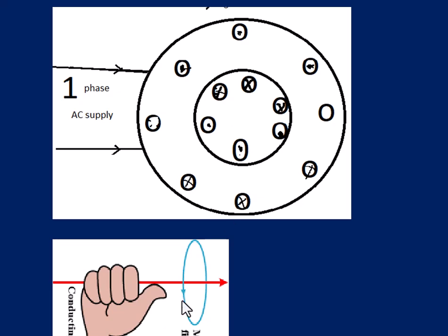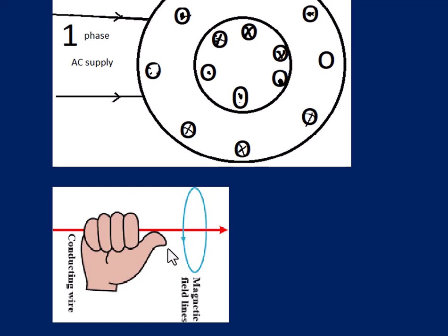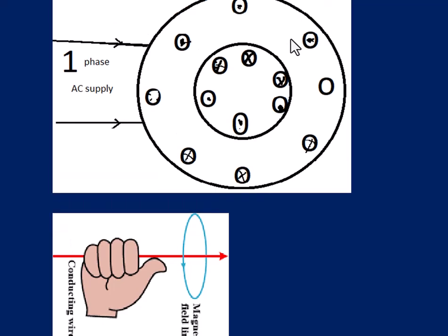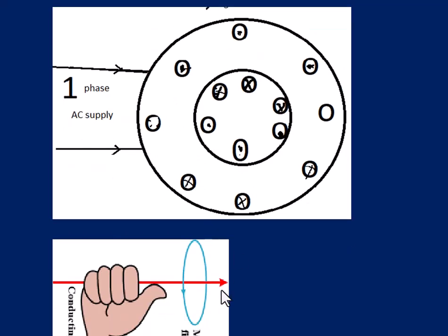This can be explained as follows: suppose the stator bottom conductors carry current into the blackboard whereas the top conductors carry current out of the blackboard. Using the right hand thumb rule, the direction of the magnetic field produced by the stator current can be shown from left to right. The fingers show the direction of the current flowing into and out of the blackboard, and the thumb indicates the direction of the magnetic field produced by the stator current.